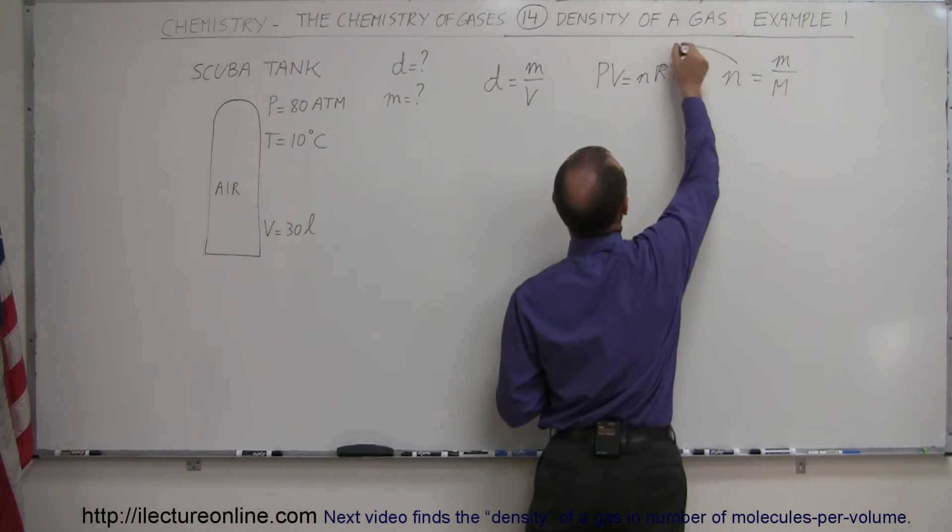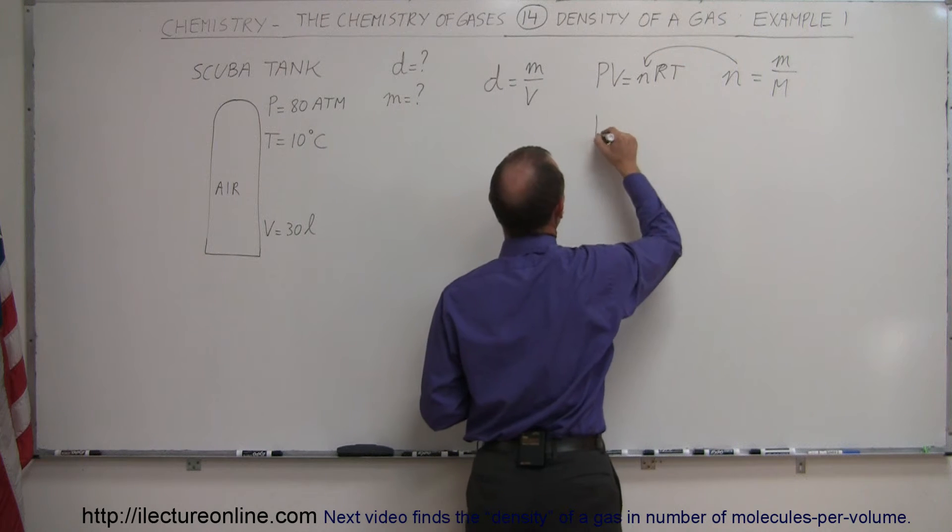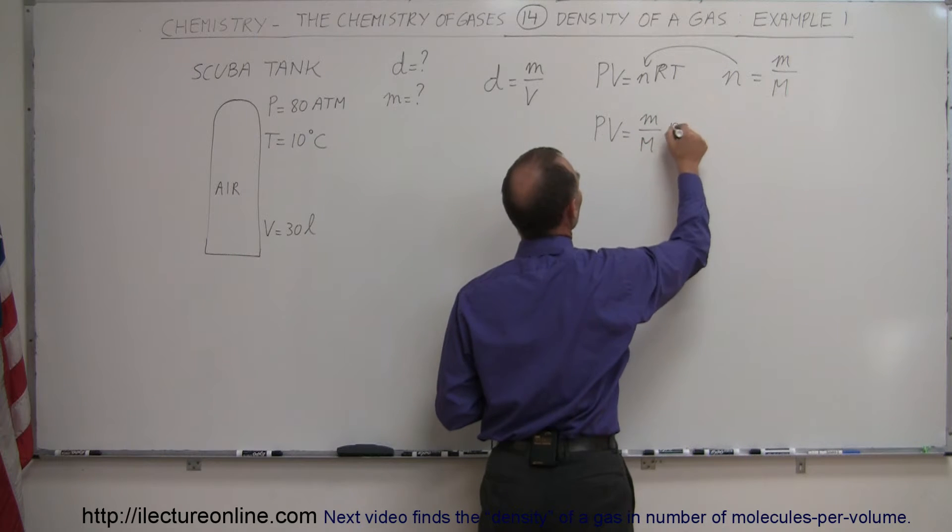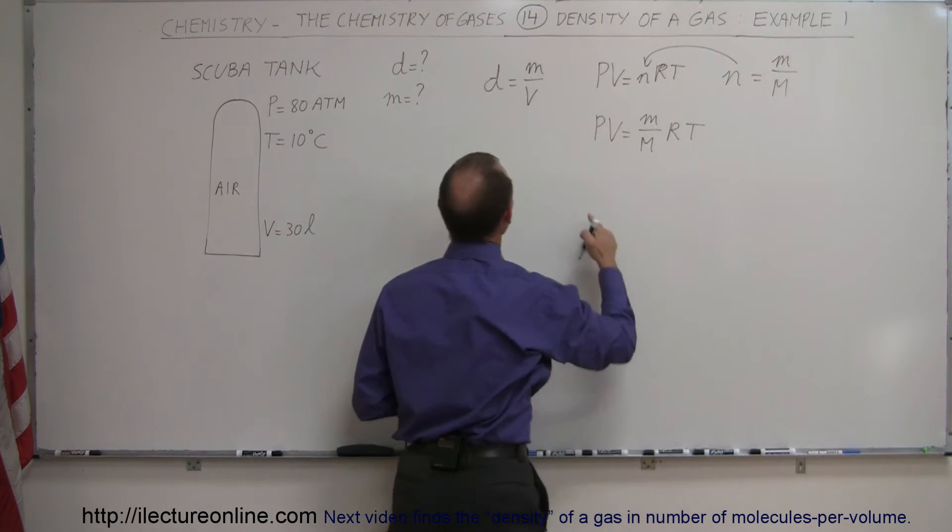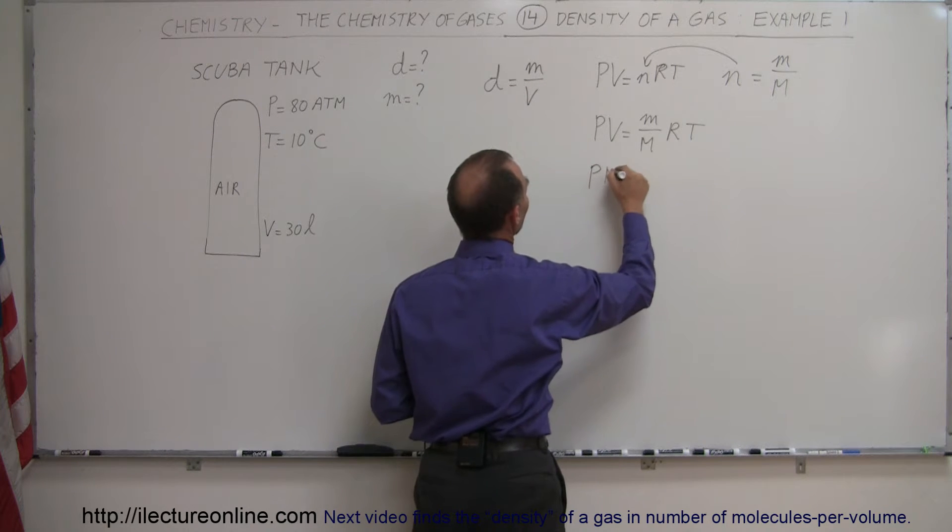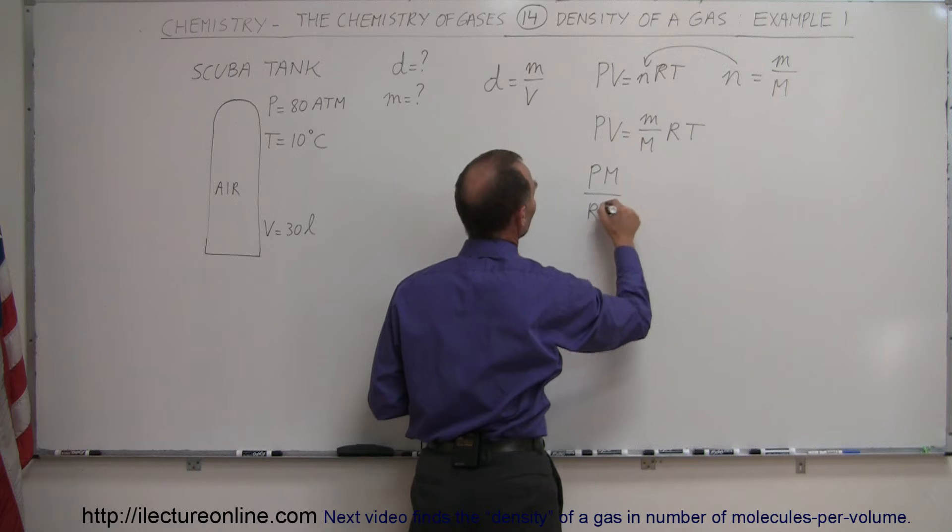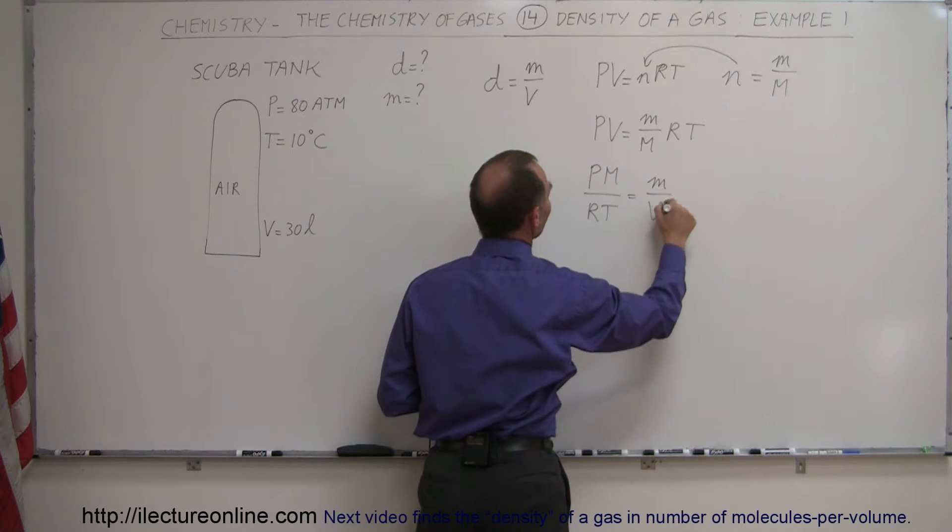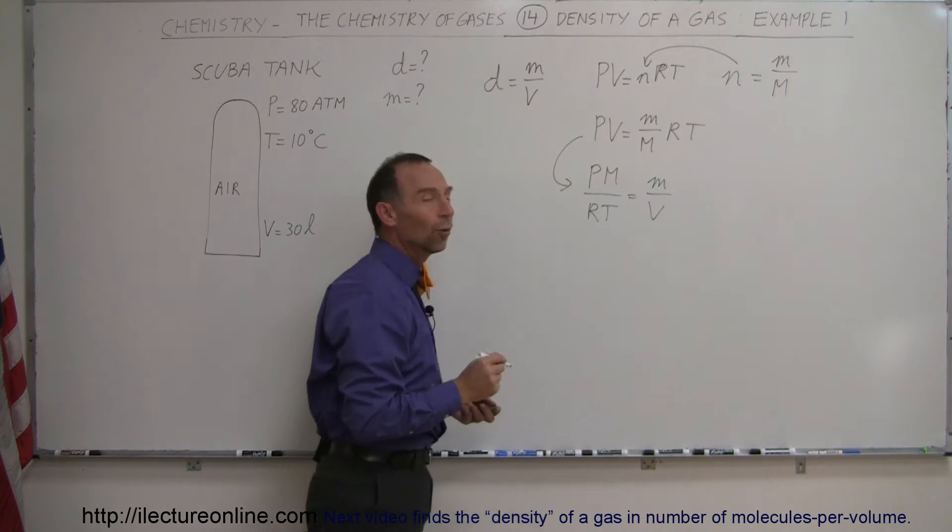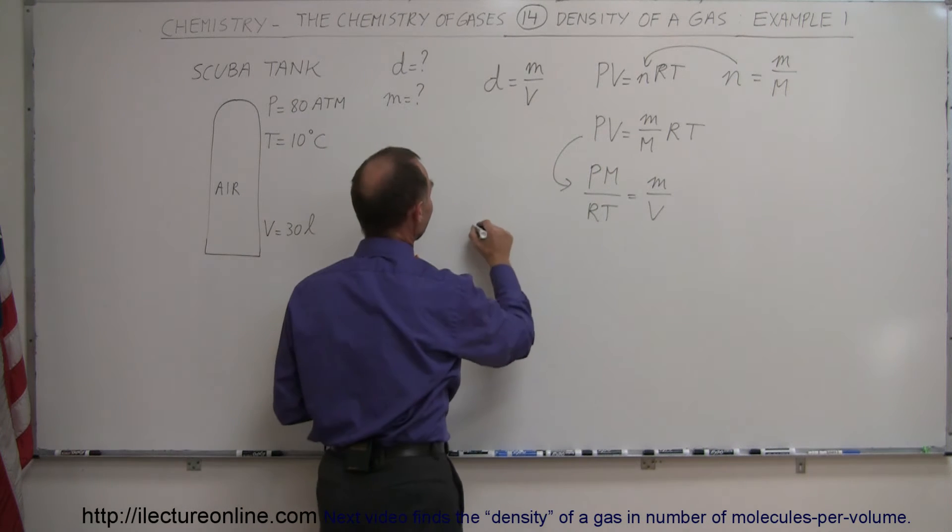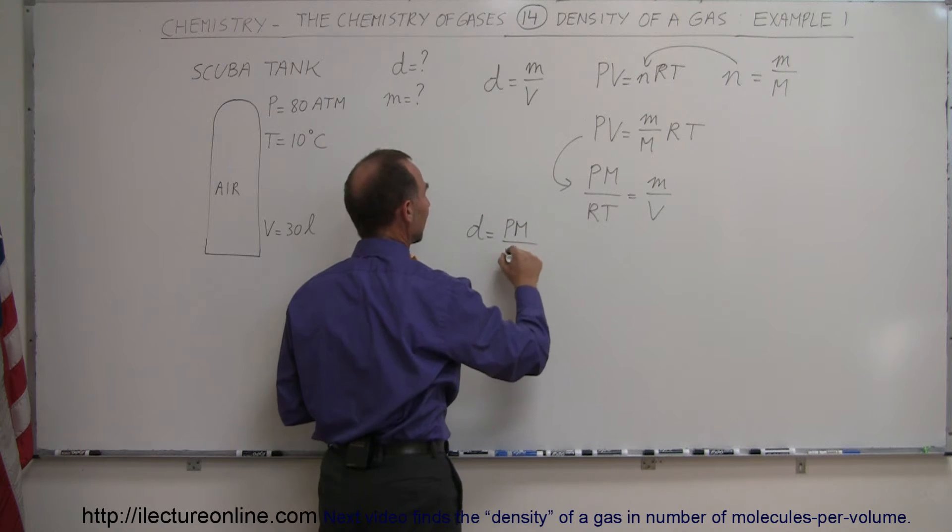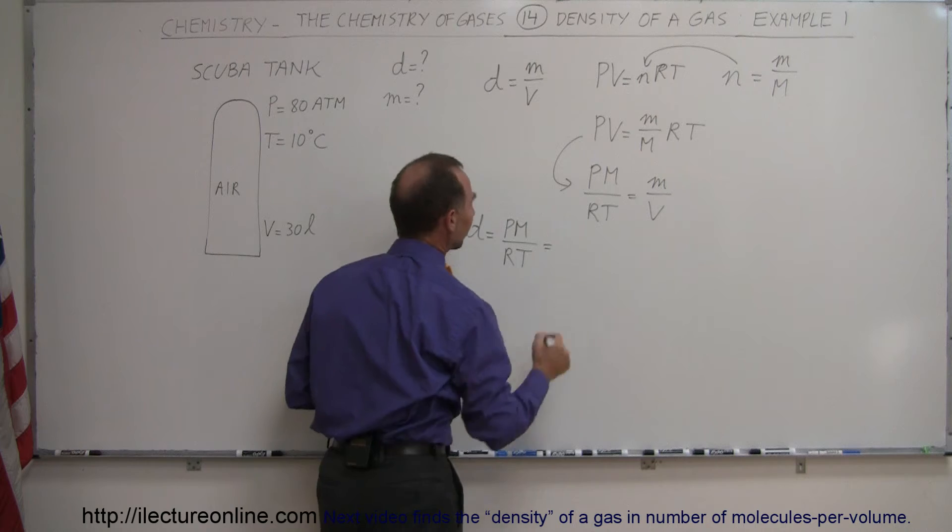So if we then plug this relationship in there in the ideal gas equation, we get PV is equal to the mass divided by the molar mass times R times T, and then we want to have M over V. So when we move things around we get P times M divided by R times T equals M divided by V. So they're just simply rearranging this equation into this form, so now we can write that the density of the gas is equal to the pressure times the molar mass divided by the gas constant and divided by the temperature.